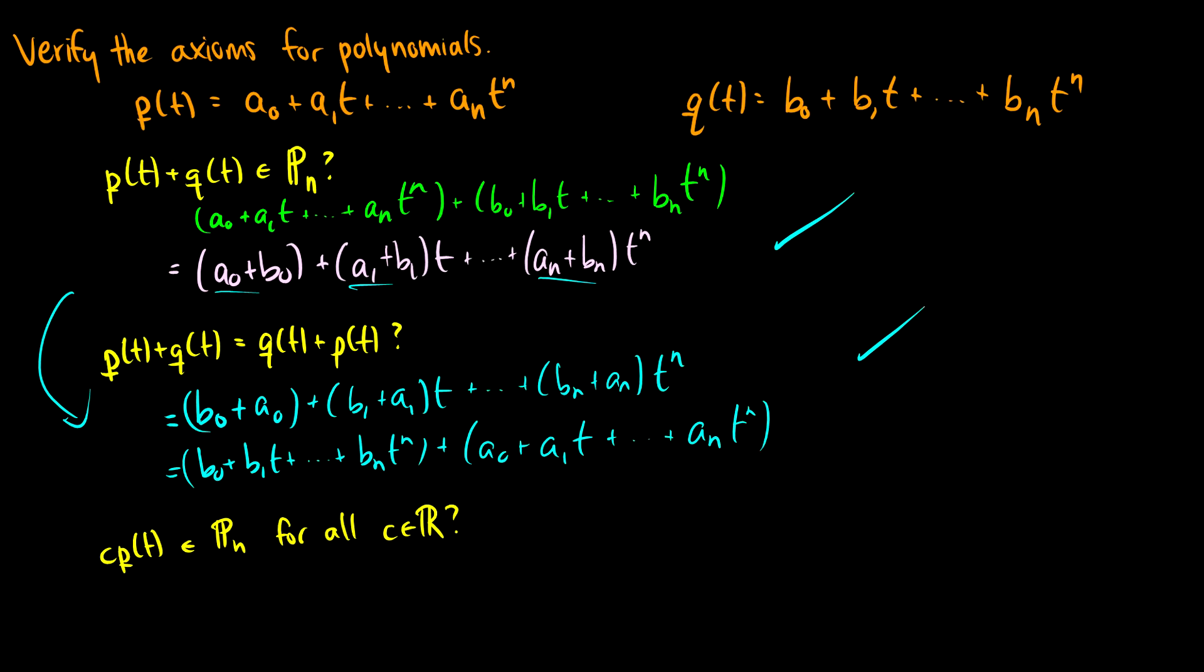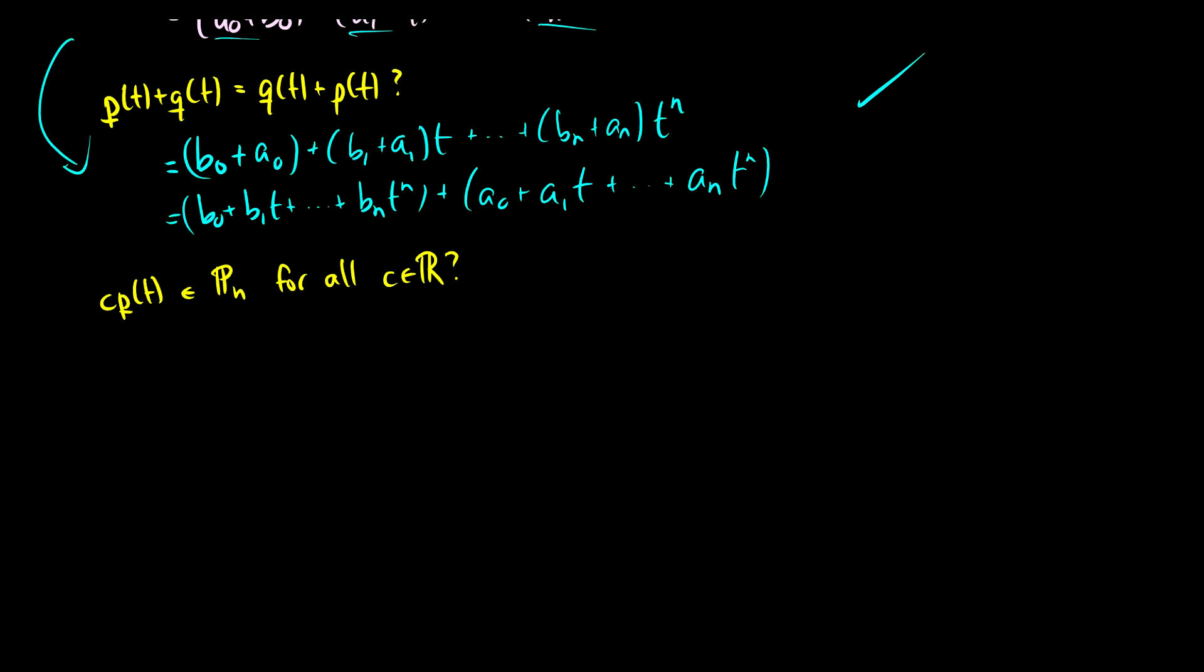What about this third one? If we take a constant and we multiply it for all c, well, first of all we have a_0 plus a_1 t, all the way up to a_n t to the n, and let's multiply that by some constant c. Well,